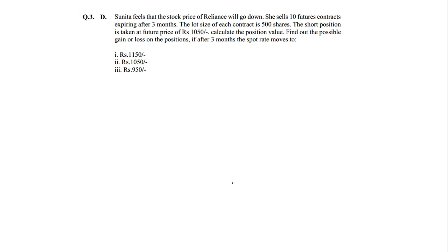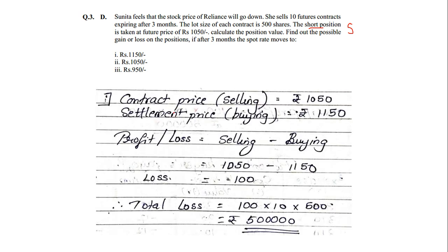In the first situation she is taking a short position, meaning she has sold. So the contract price is on the sell side. On the settlement date we will have to buy. So we have three options for buying, and we will go through them one by one. In all three cases the contract price will be selling only, because they are taking a short position.